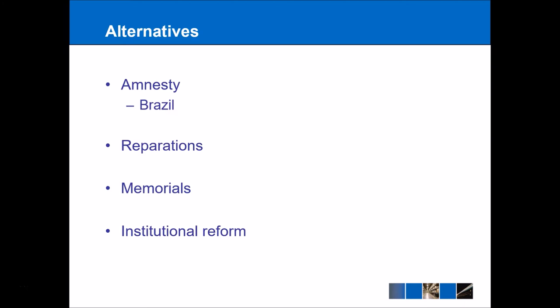Perhaps one of the most effective means of transitional justice is institutional reforms. This means looking at the institutions that existed before the transition and examining why those institutions allowed for human rights violations to occur. Once we understand why those institutions were problematic or faulty in some way, we can reform those institutions to prevent any future human rights violations occurring ever again. Now, let's move on to examine truth commissions.